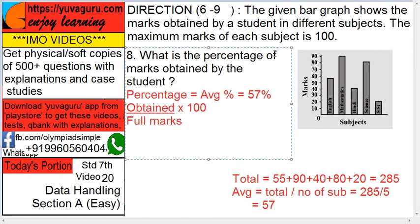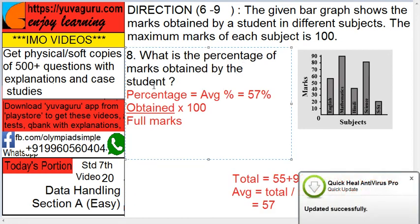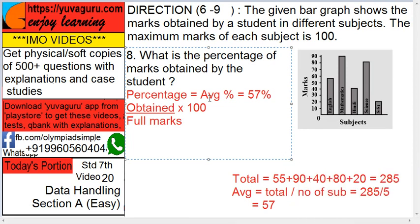What is the percentage of marks obtained by the student? It's very simple. Percentage means average percentage. What is the average you got in the last problem? Only put percent to that. That is the same. Why?